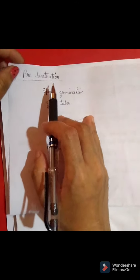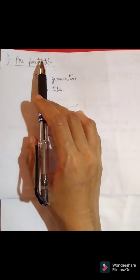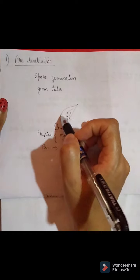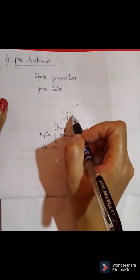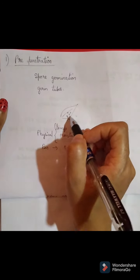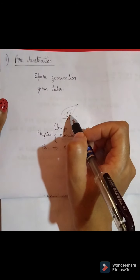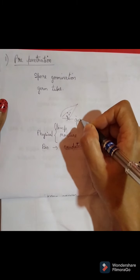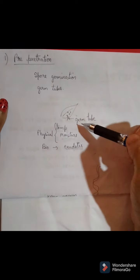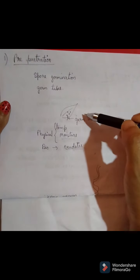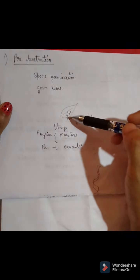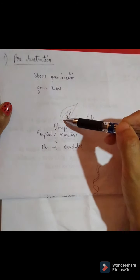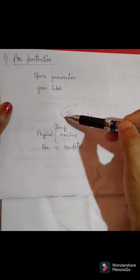Let us talk about the first phase: pre-penetration. In pre-penetration, when the spore comes in contact with a plant — for example, the leaf of a plant — spores of microorganisms such as fungi or bacteria come in contact with the host plant. They will start to germinate and lead to the formation of a germ tube, as discussed in the life cycle of Puccinia graminis tritici. It is through the germ tube that the spore will penetrate the plant, entering through the stomata, through wounds, or through the plant itself.